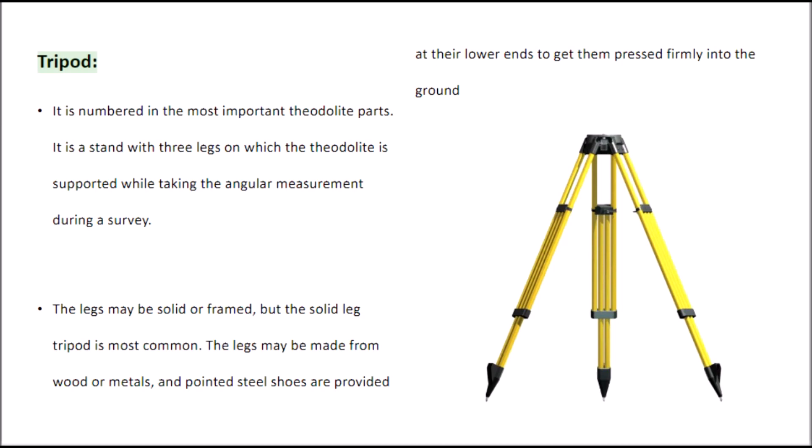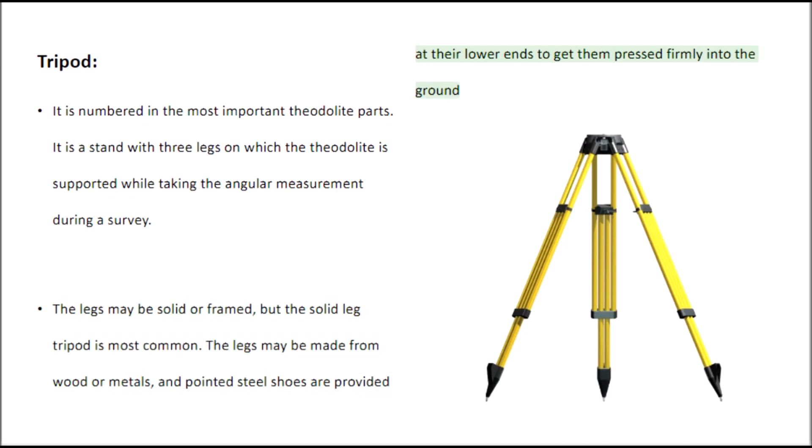Tripod. It is numbered among the most important theodolite parts. It is a stand with three legs on which the theodolite is supported while taking angular measurements during a survey. The legs may be solid or framed, but the solid leg tripod is most common. The legs may be made from wood or metals, and pointed steel shoes are provided at their lower ends to get them pressed firmly into the ground.